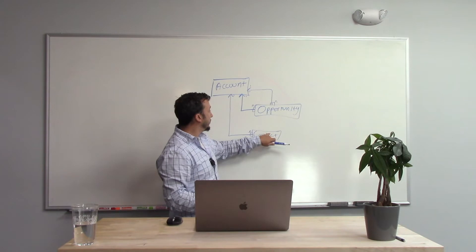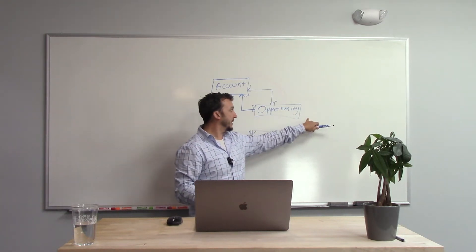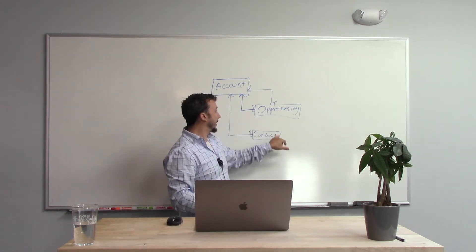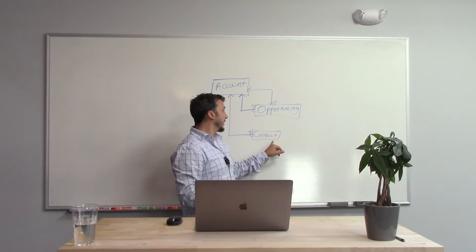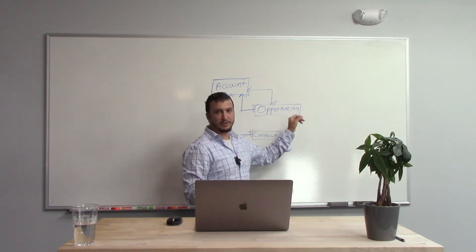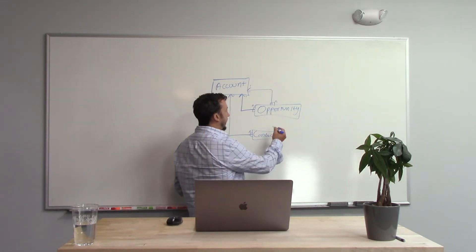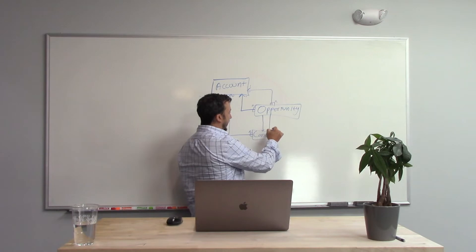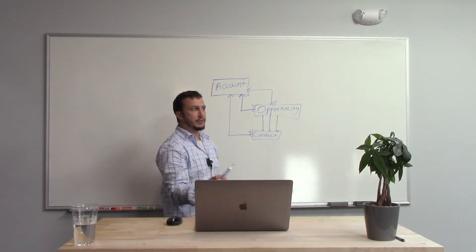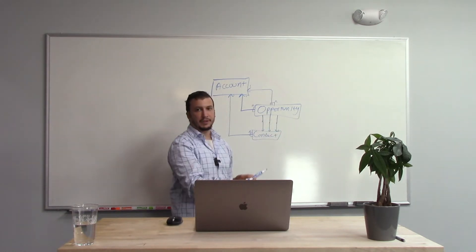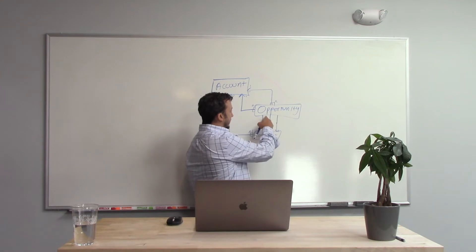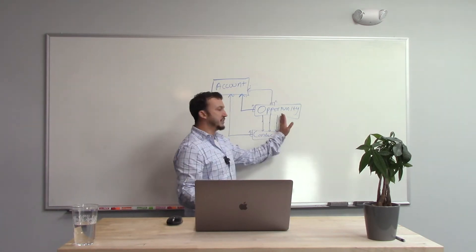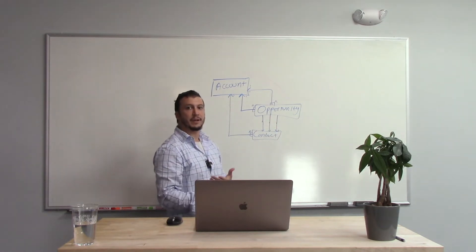Joe and Sarah might be contacts on this opportunity and the next one and the next one, but then three other people might be working with this company on other opportunities. An opportunity could have many contacts playing a role, and a contact can play a role on many opportunities — a true N-to-N relationship. Just creating a lookup from a contact to an opportunity wouldn't work. I could create three contact lookup fields on an opportunity — contact one, contact two, contact three — but that only gives me a one-to-three relationship. What if I had four or five contacts? I don't want to add more fields just because of this situation.